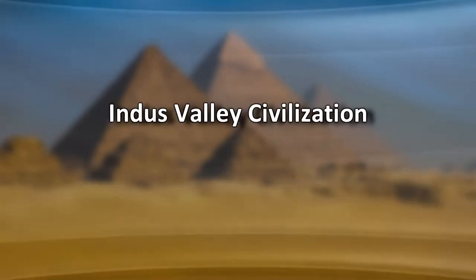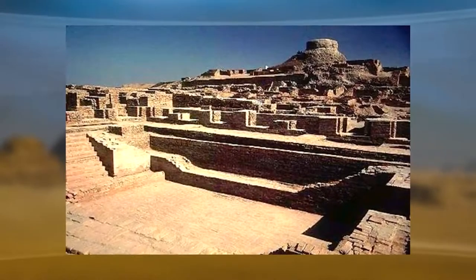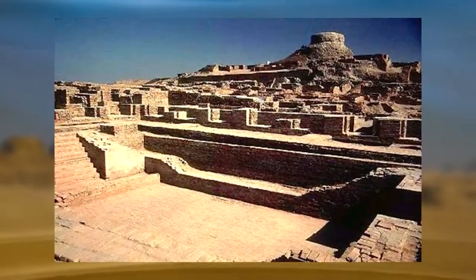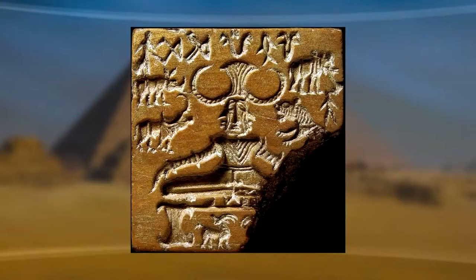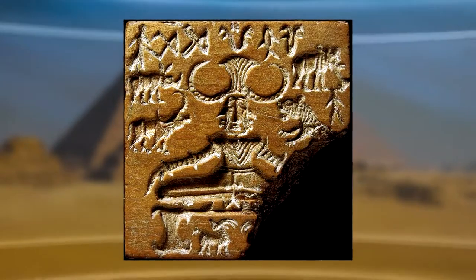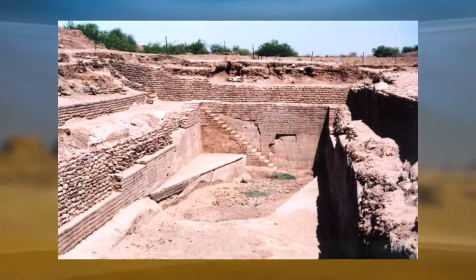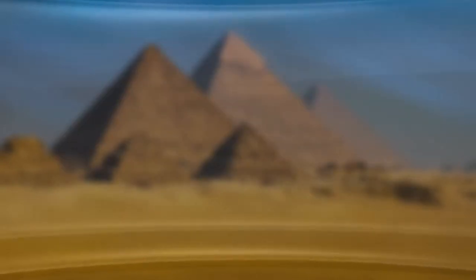The dates for the Indus Valley Civilization have been marked from 3300 BC to 1700 BC. The territory flourished along the Indus and Ghaggar-Hakra rivers in Pakistan, with settlements excavated in Afghanistan and India. It is also known as the Harappan Civilization, first excavated in Harappa, Punjab. The civilization was uncovered recently in the 1920s because of a rail construction happening in the area.